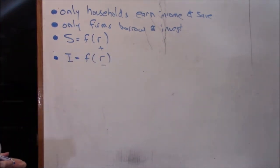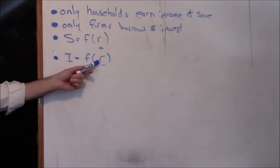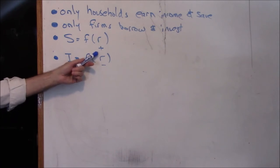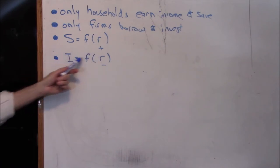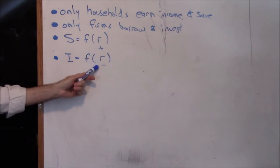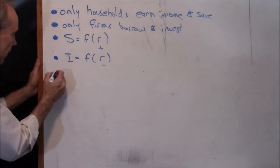Fourth: investment is a negative function of the interest rate. If firms have to borrow money in order to invest, then when it's costlier to borrow — when R goes up — investment goes down. And when it's cheaper to borrow — when R goes down — investment goes up. A negative sign means opposite direction.